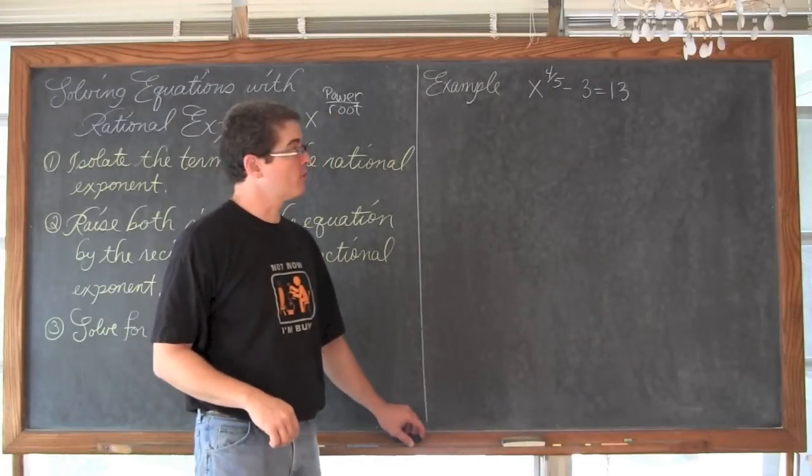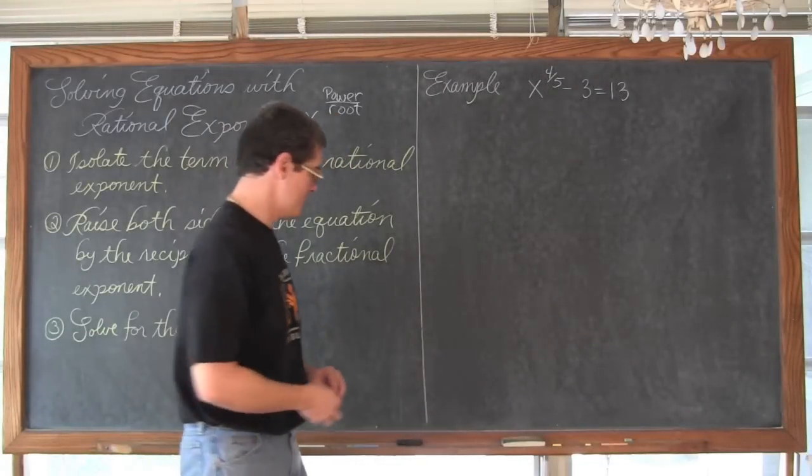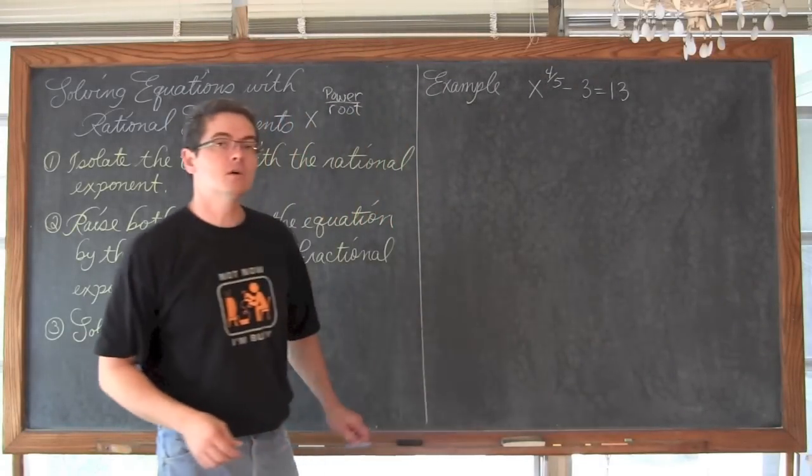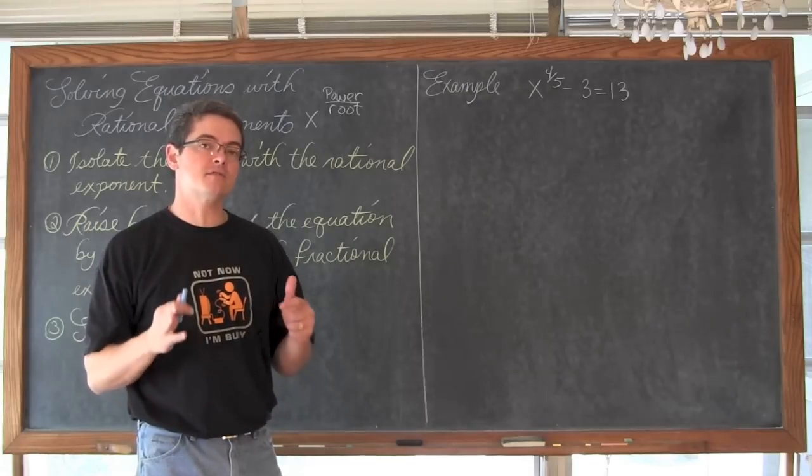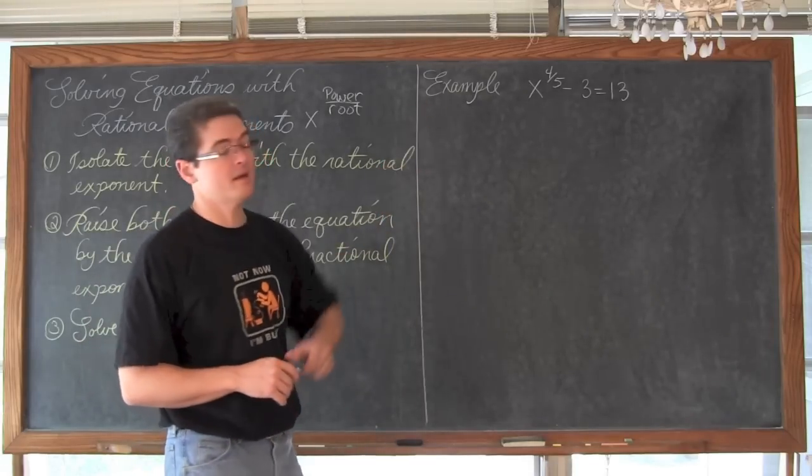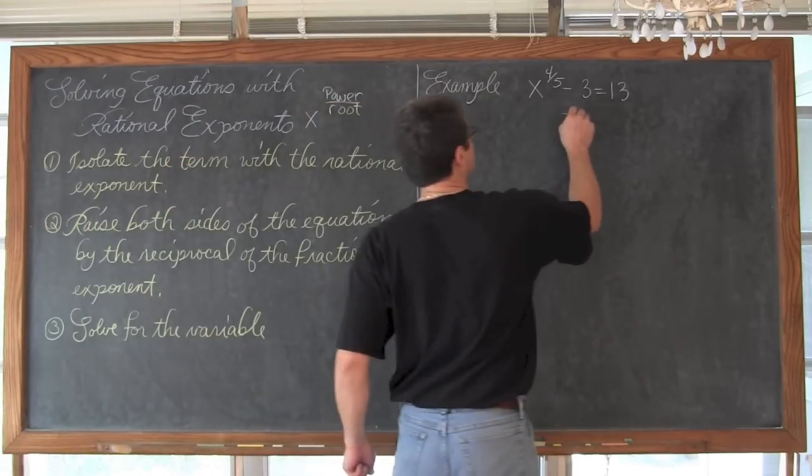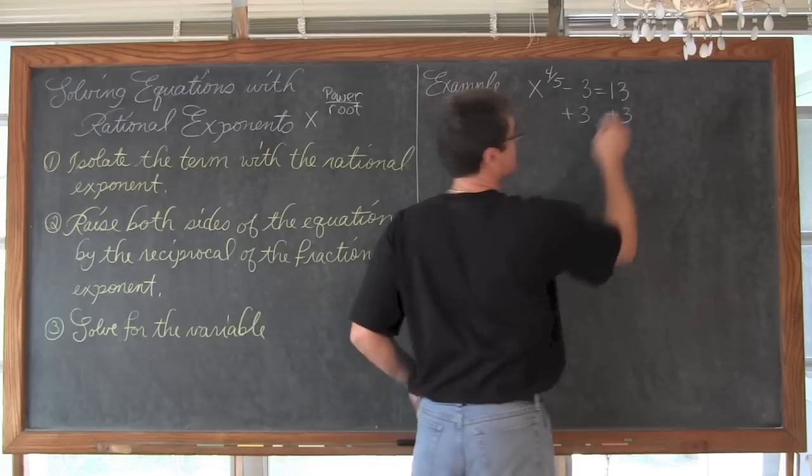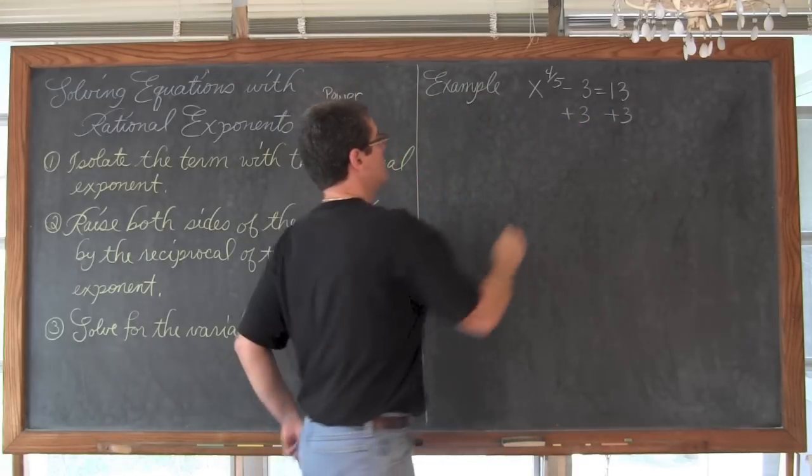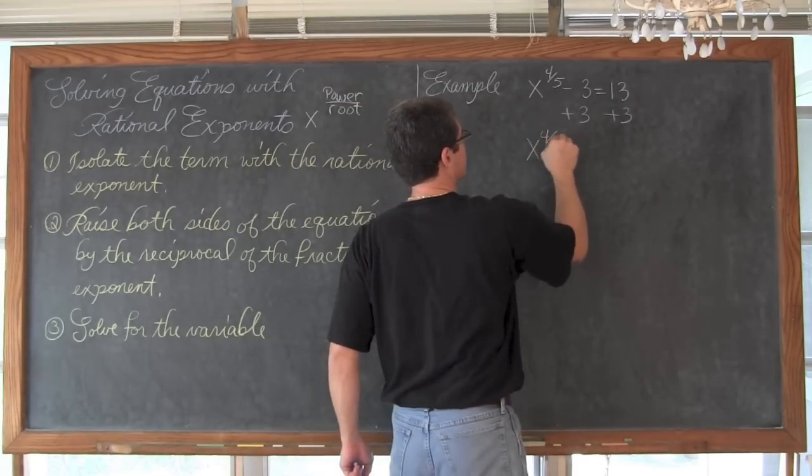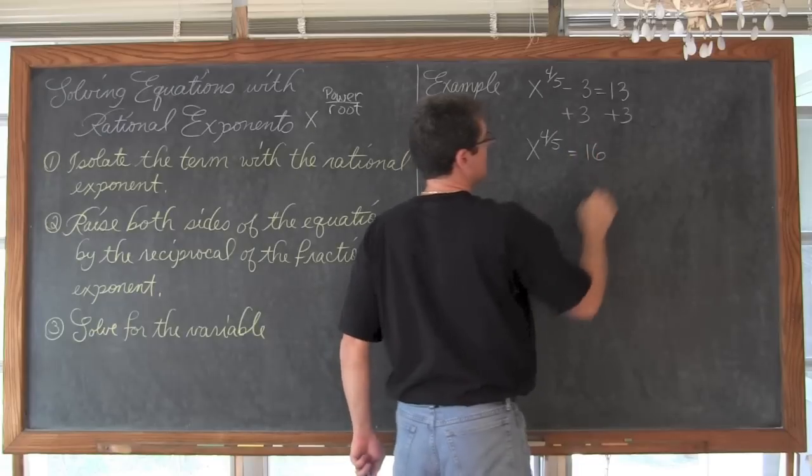For our first example we have x to the four-fifths minus 3 is equal to 13. So we need to get that term isolated that has a fractional exponent. That is going to be the x to the four-fifths. We are going to add 3 to both sides of the equation. We get x to the four-fifths is equal to 16.